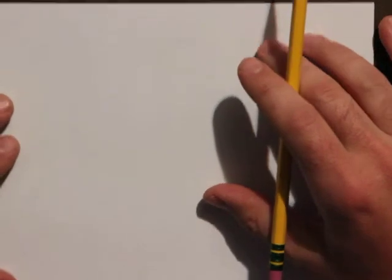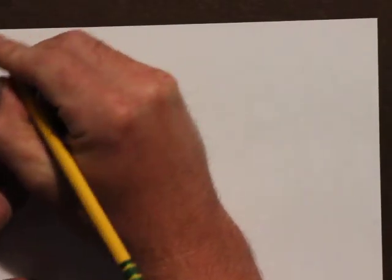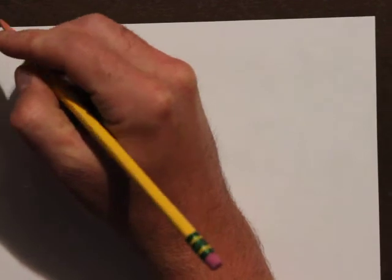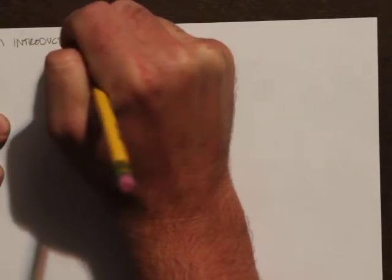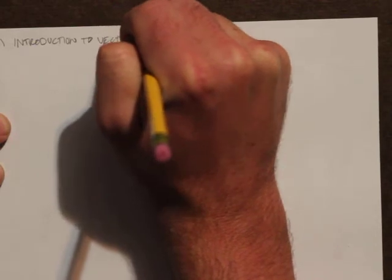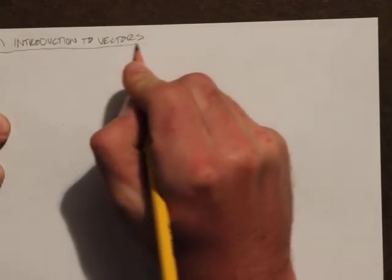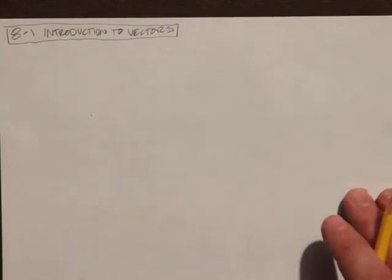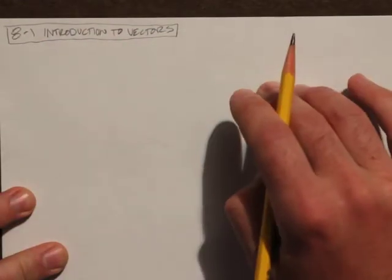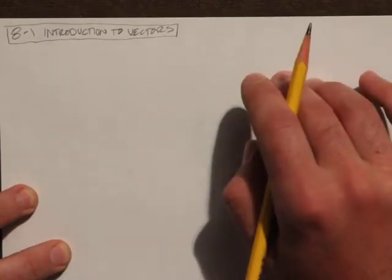Alright, 8-1 Introduction to Vectors. We're going to talk about vectors here. We're going to set out our paper in two columns and write something down in the middle.